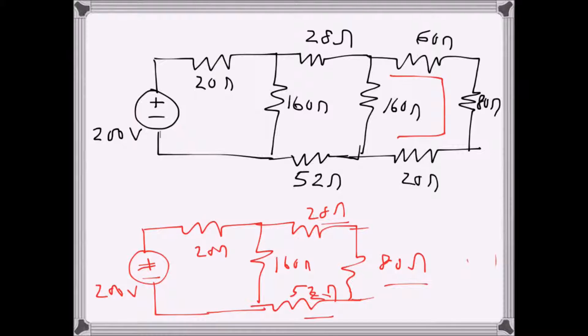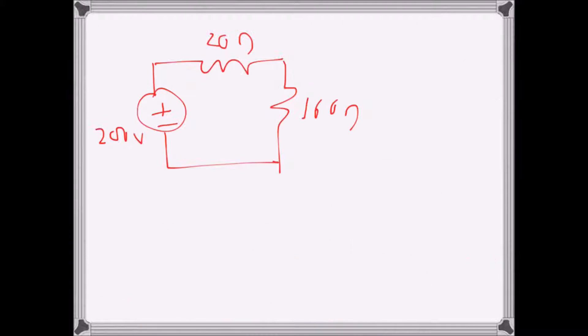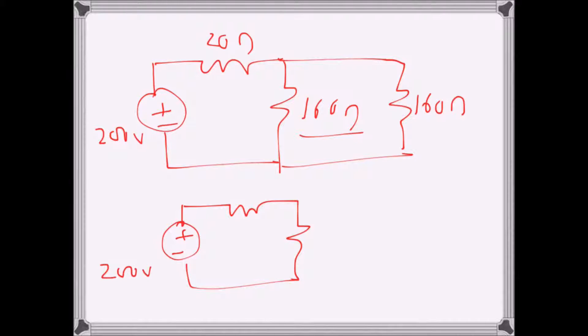When these three are added, 52 and 28 is 80 plus 80, so that's again 160 ohms. Again I have 160 ohms, so now I can see that two 160s again in parallel. So I have basically 20 here, 20 here, and 80 here, and this is 200 volts.